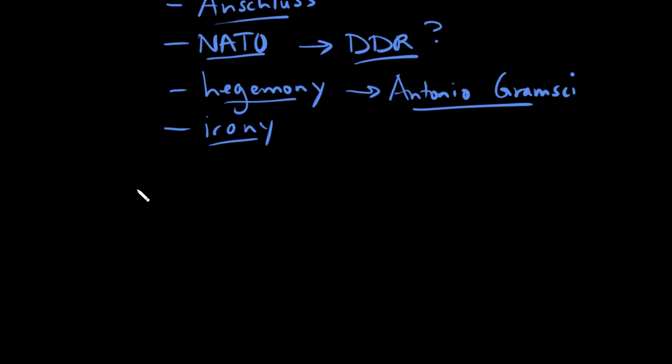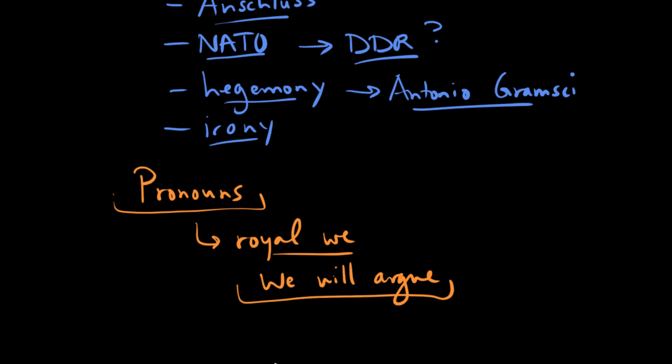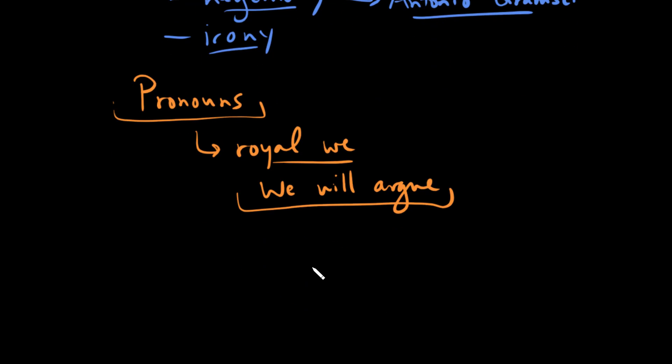And then the last point I want to make has to do with pronouns. When you write your essay for the general audience that we've talked about, you don't want to come across as too pompous. And the one thing you really want to avoid is the use of the royal we. So avoid expressions like we will argue. There's presumably just one of you writing the paper, and if that is the case then don't use the royal we.